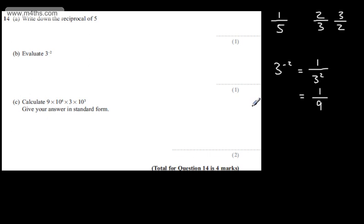In part C, we're asked to calculate 9 times 10 to the power of 4 times 3 times 10 to the power of 3 and give our answer in standard index form. The question carries two marks.